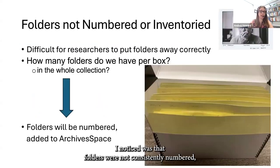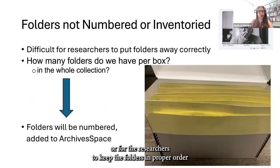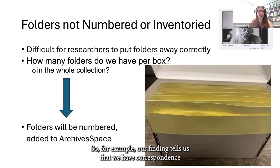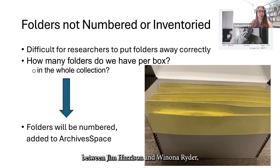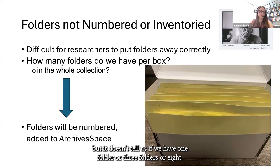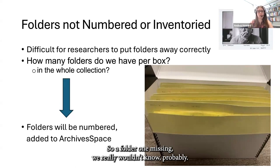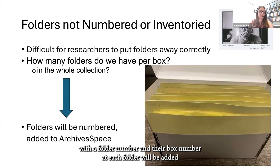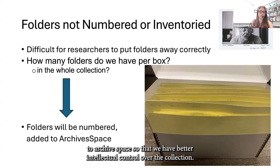Another problem was that folders were not consistently numbered, making it difficult for researchers to keep folders in proper order when they were done with them, and much harder for us to put stray folders back in their proper boxes. We also didn't have a great idea of what exactly we had. For example, our finding aid tells us we have correspondence between Jim Harrison and Winona Ryder, but it doesn't tell us if we have one folder, three folders, or eight. So if a folder went missing, we really wouldn't know. Once I'm done, folders will be labeled with a folder number and their box number, and each folder will be added to ArchivesSpace so that we have better intellectual control over the collection.